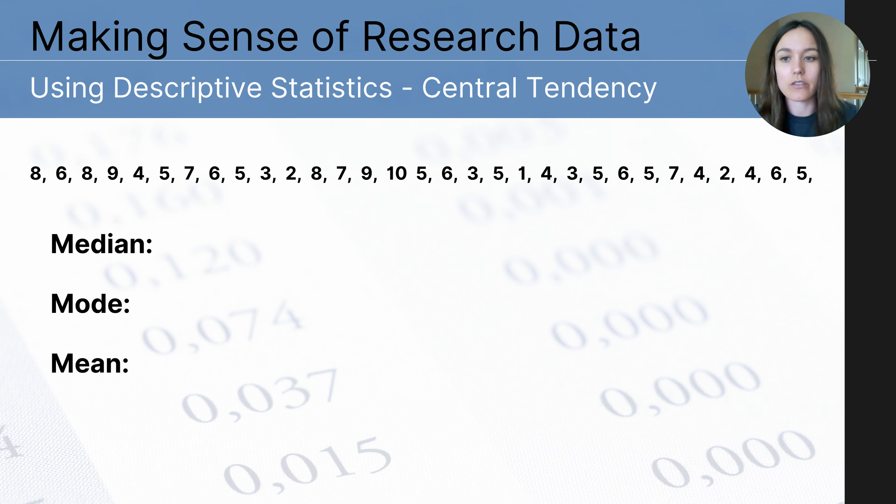And if you need a reminder, the median is the number that falls directly in the center of the data set when you've ordered it chronologically. The mode is the number that occurs most frequently or most often and there can be more than one mode.